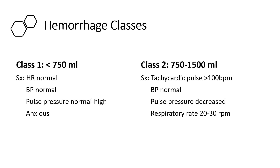Hemorrhage is classified in four different categories. Class one is a loss of blood less than 750 mils — about one and a half units of packed cells. During this type of hemorrhage, heart rate can be normal, blood pressure can be normal, but the pulse pressure may be normal or slightly elevated. A person may feel a little anxious because when blood is lost, we also lose the oxygen that perfuses our tissues, especially the brain and heart, and this can cause anxiety.